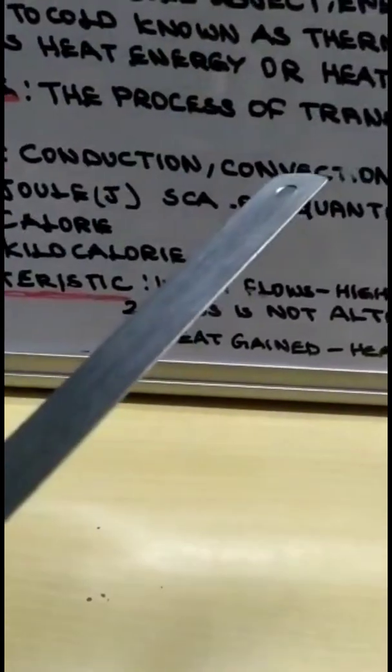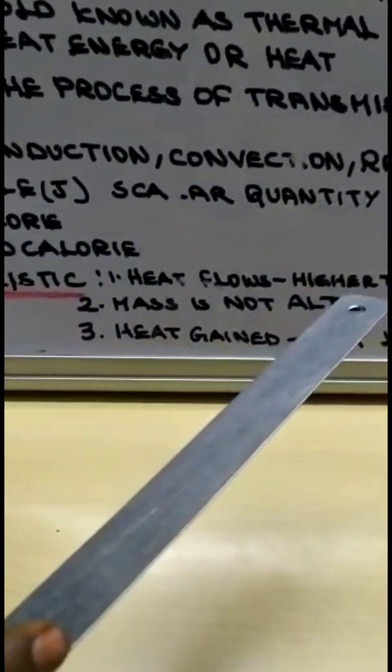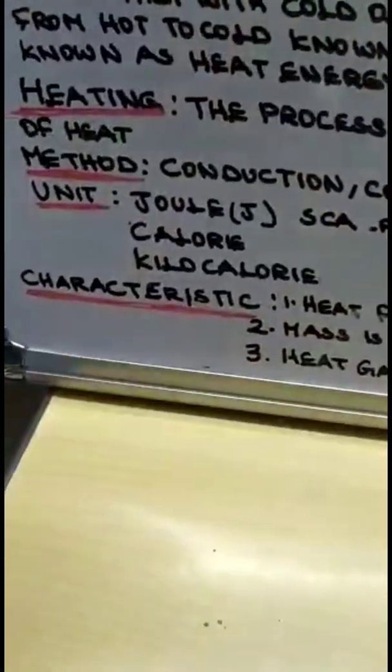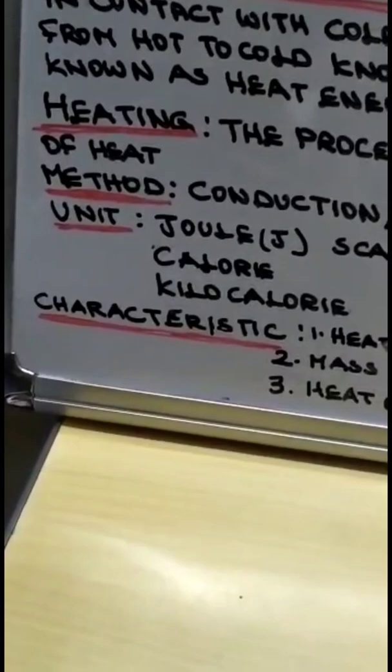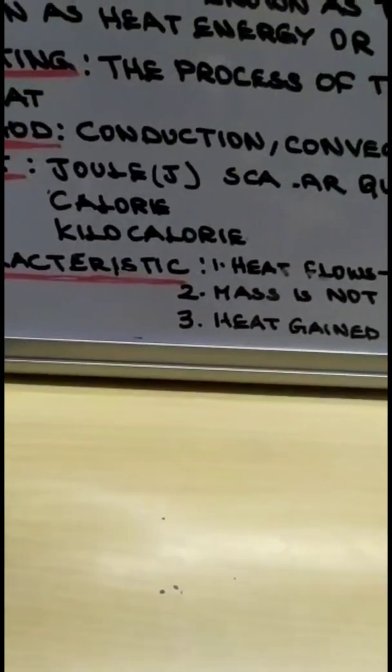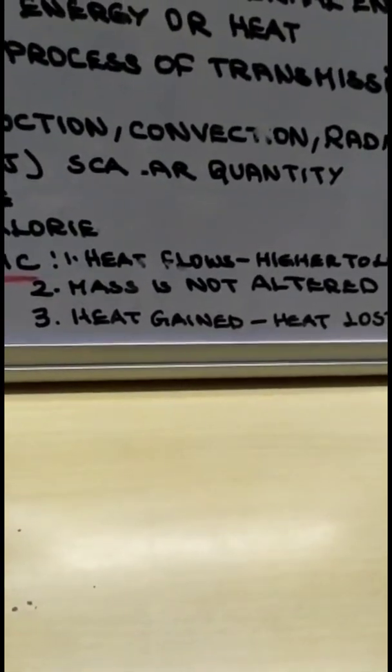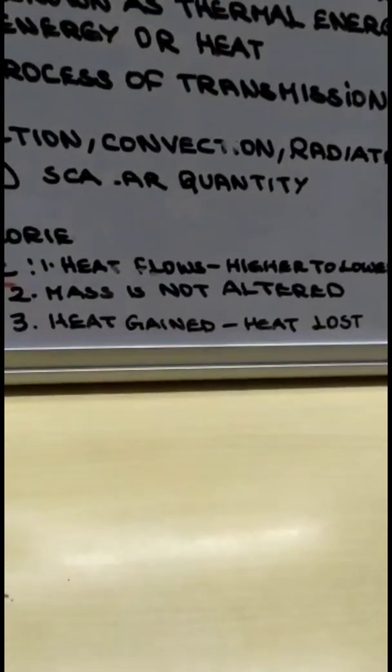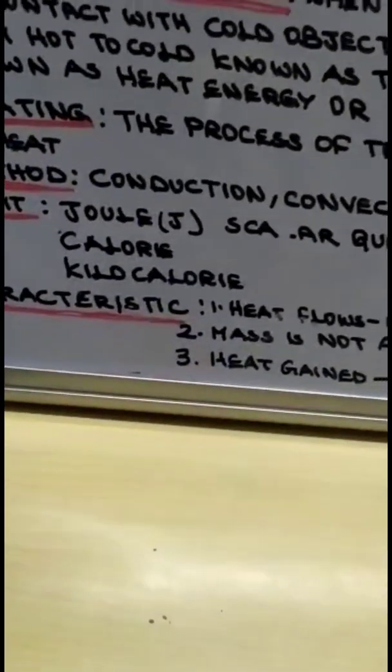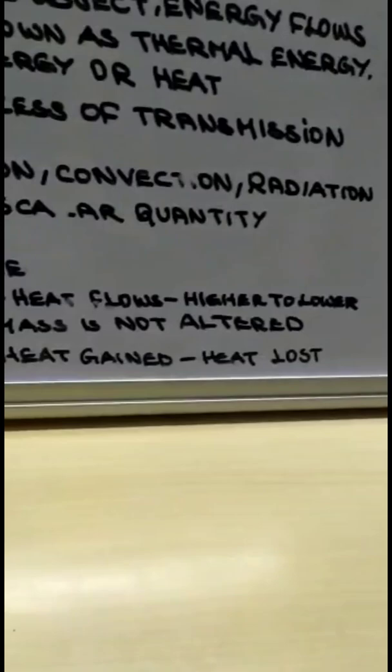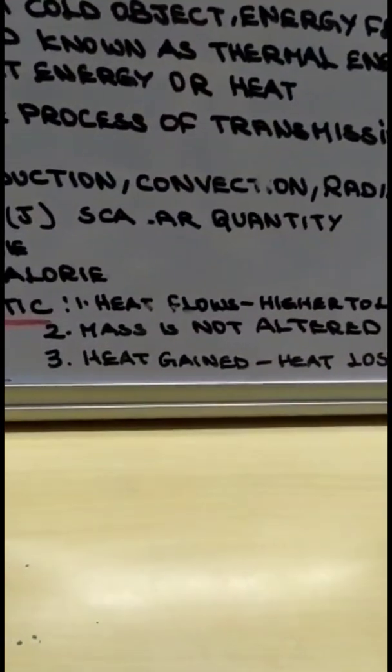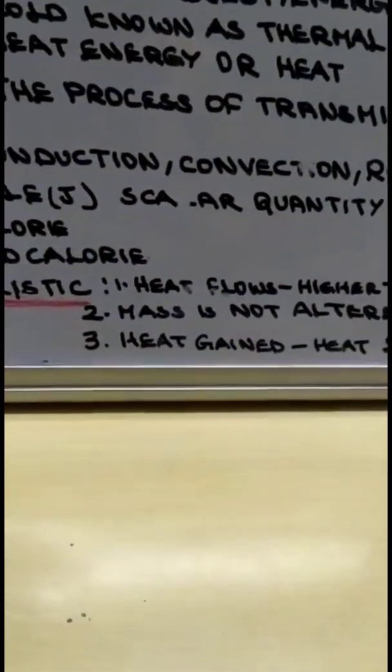We are talking about heat. This heat has three different characteristics. When a very hot object is placed in a cold object, the heat is transferred from the hot object to the cold object. So always the first characteristic is heat flows from the higher temperature to the lower temperature. That is the body with the higher temperature to the body with the lower temperature. This is the first characteristic.